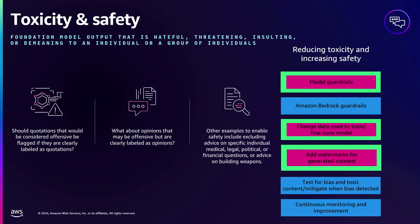Another common issue is toxicity — outputs considered hateful, threatening, insulting, or demeaning to an individual or group. You can use model guardrails, prompt guardrails, or if you're using Amazon Bedrock, it provides out-of-the-box techniques to configure guardrails. Ensure your fine-tuning data doesn't contain toxic content. Add disclaimers and watermarks to indicate AI-generated output. Use a separate model trained to detect toxic content to filter your responses, and continuously monitor your application outputs.